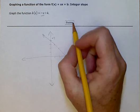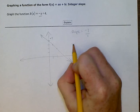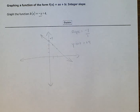So our slope was negative 1 over 1, and our y-intercept was positive 4.